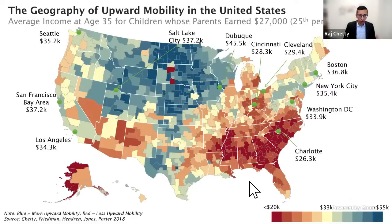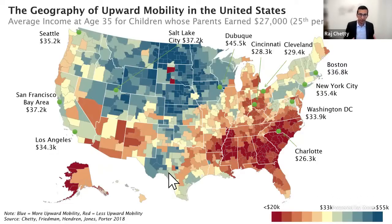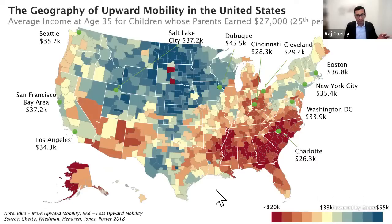In earlier work we used data from anonymous tax returns on essentially all kids born in America in the early 1980s — about 20 million children. We mapped them back to where they grew up, dividing the US into 740 different metro and rural areas. In each area we calculate a simple measure of upward mobility: for children born to low-income parents at the 25th percentile — about $27,000 a year — where did those kids end up when we measure their incomes in their mid-30s?